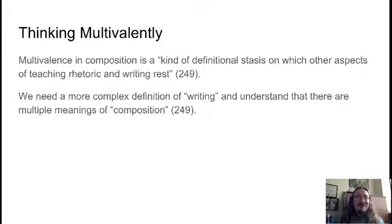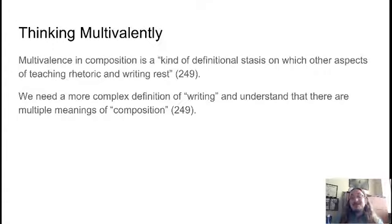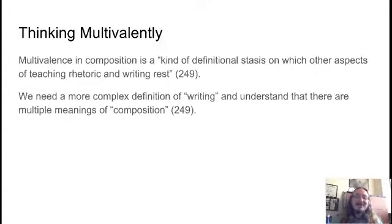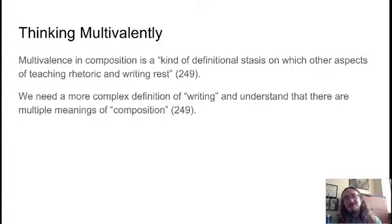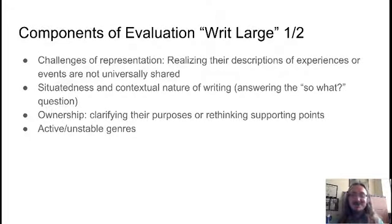Their answers are kind of interesting. They talk about multivalent logics — calling that a kind of definitional stasis on which other aspects of teaching rhetoric and writing rest. To me it boils down to this: we need a more complex, more flexible and versatile definition of writing. We want to come away from that one-size-fits-all model and understand there are multiple meanings even of what we mean by composition. There are different things we might get up to in a composition classroom besides five-paragraph essays — trying to be a little bit more flexible when we talk about writing.